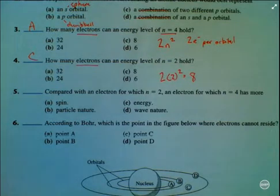Number five, compared with an electron for which n is equal to two, an electron for which n is equal to four has more spin, particle nature, energy, or wave nature.